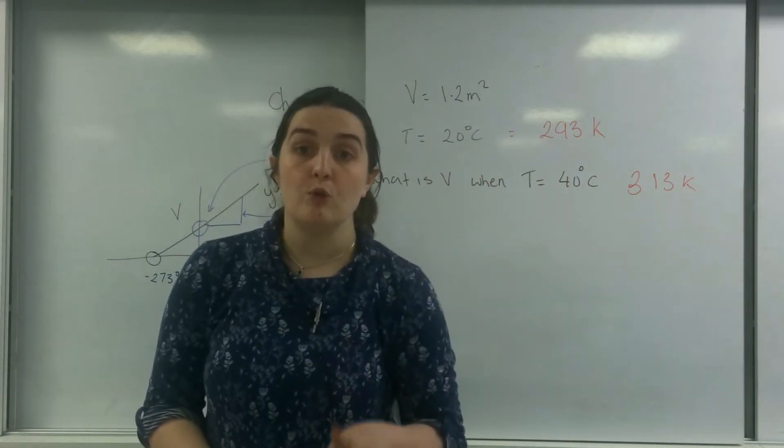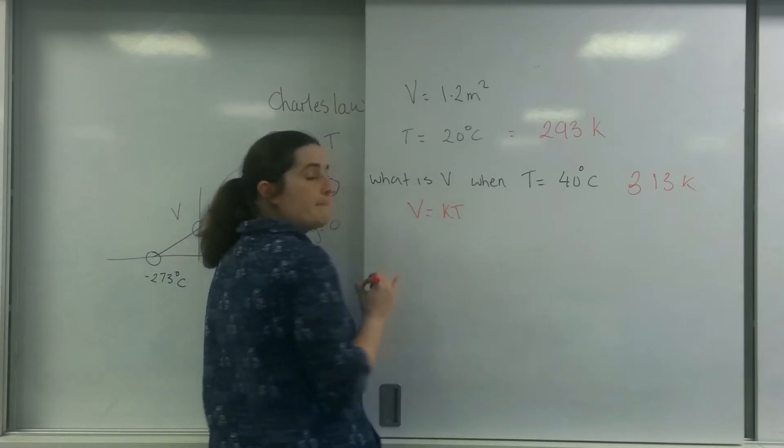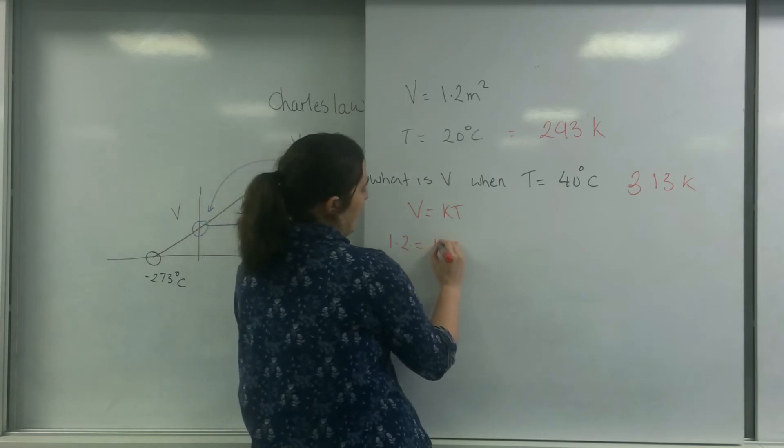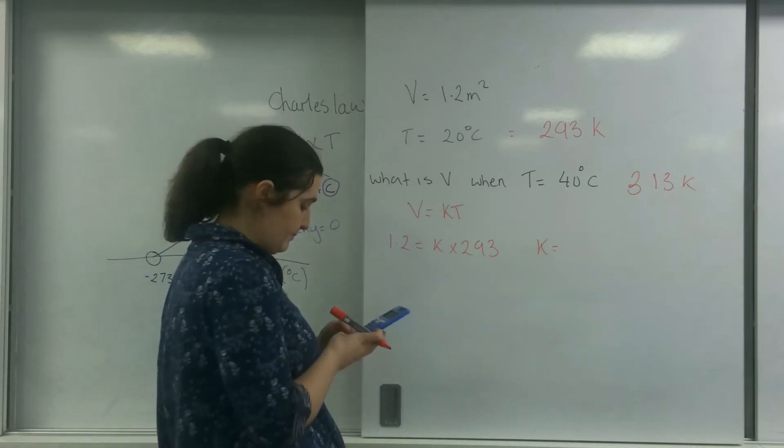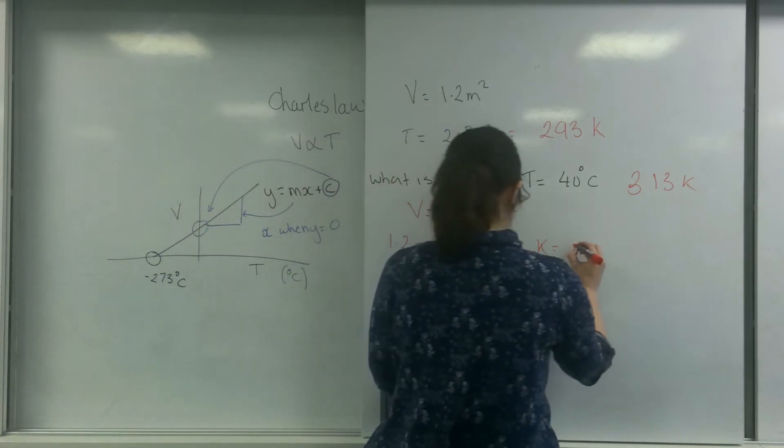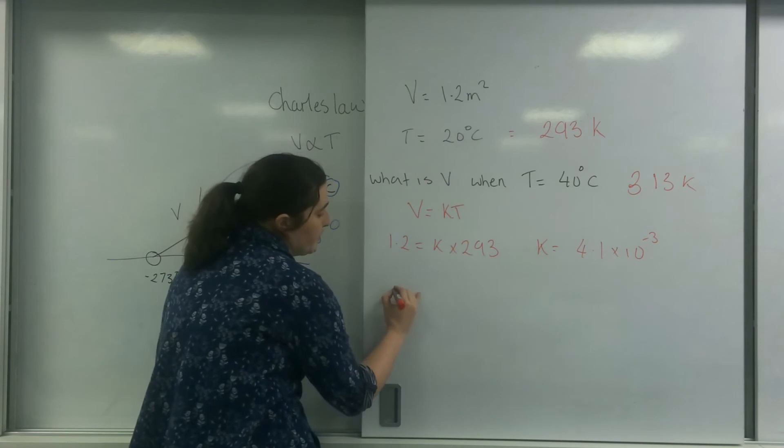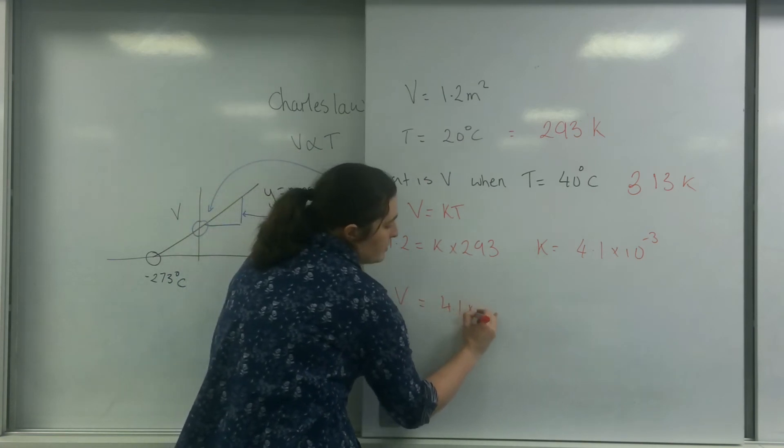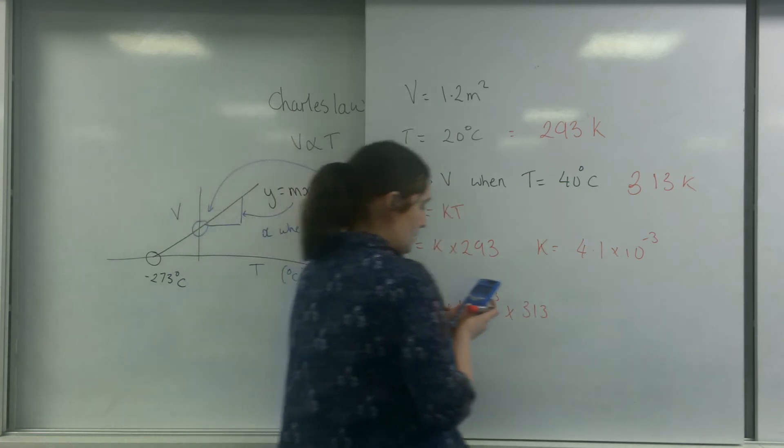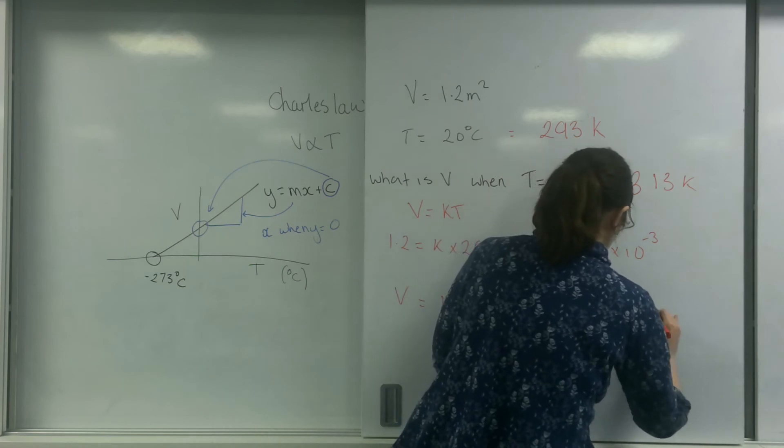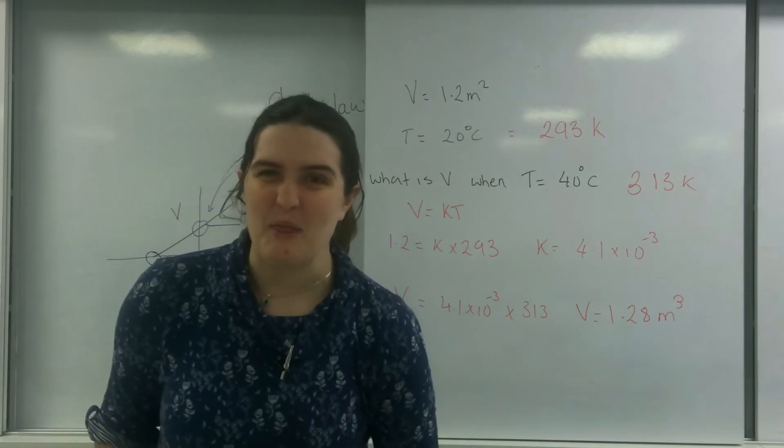I can now use the directly proportional formula. So I'm going to use that volume is KT. So 1.2 is K times 293. So K is 4.1 times 10 to the minus 3. So afterwards, volume equals 4.1 times 10 to the minus 3 times by 313. Volume equals 1.28 meters cubed. That sounds more like it. It does expand, but not by that much at all.